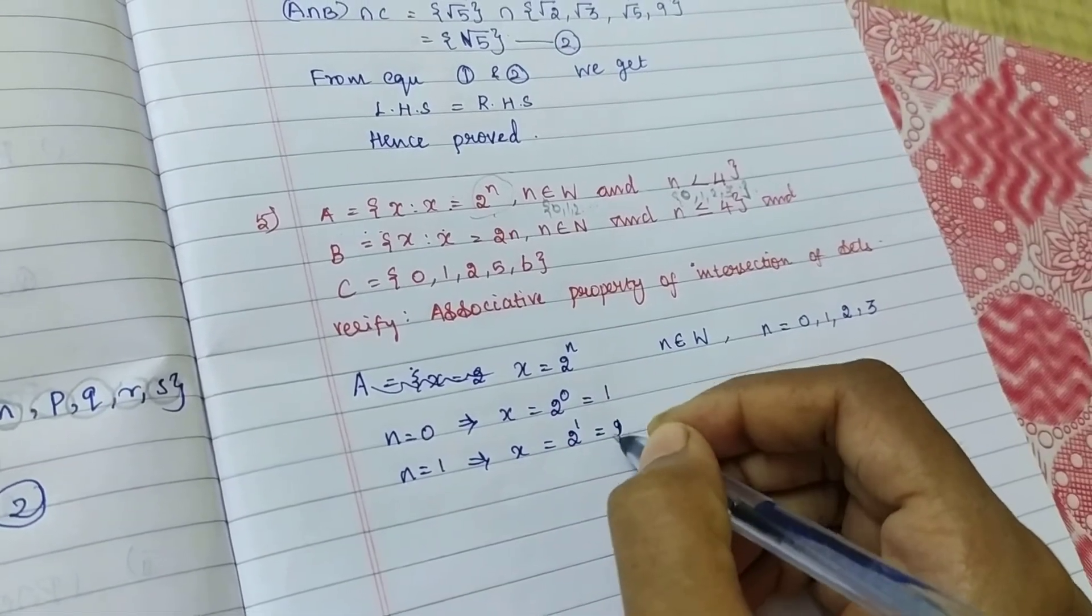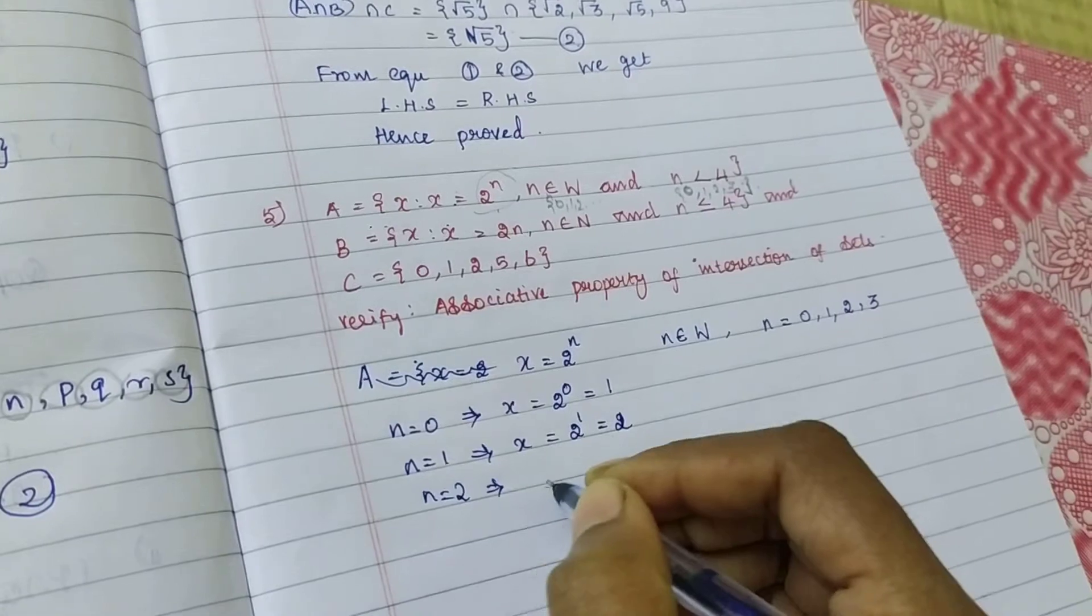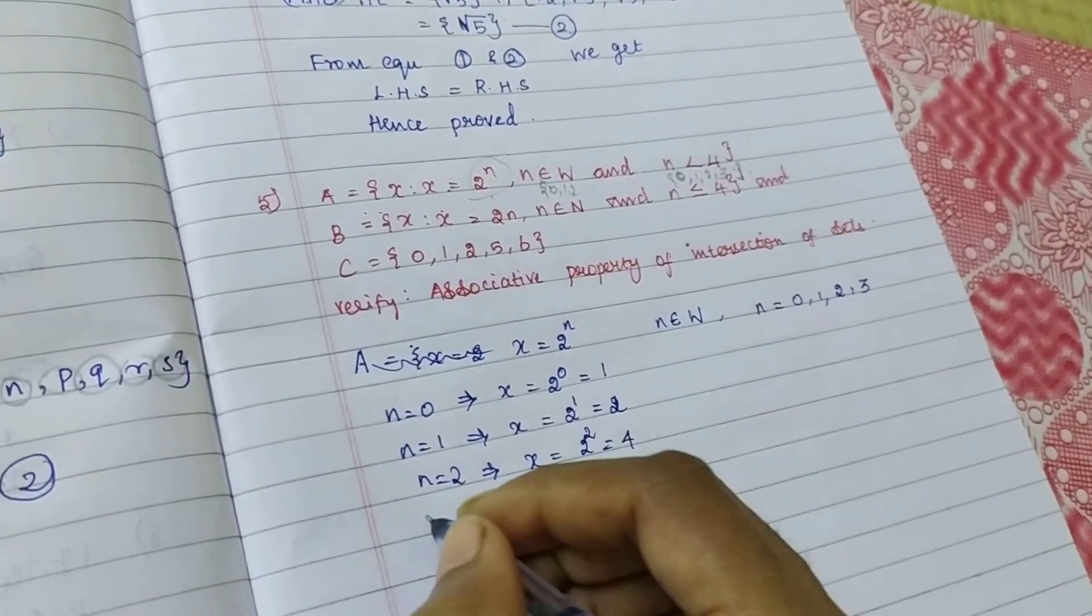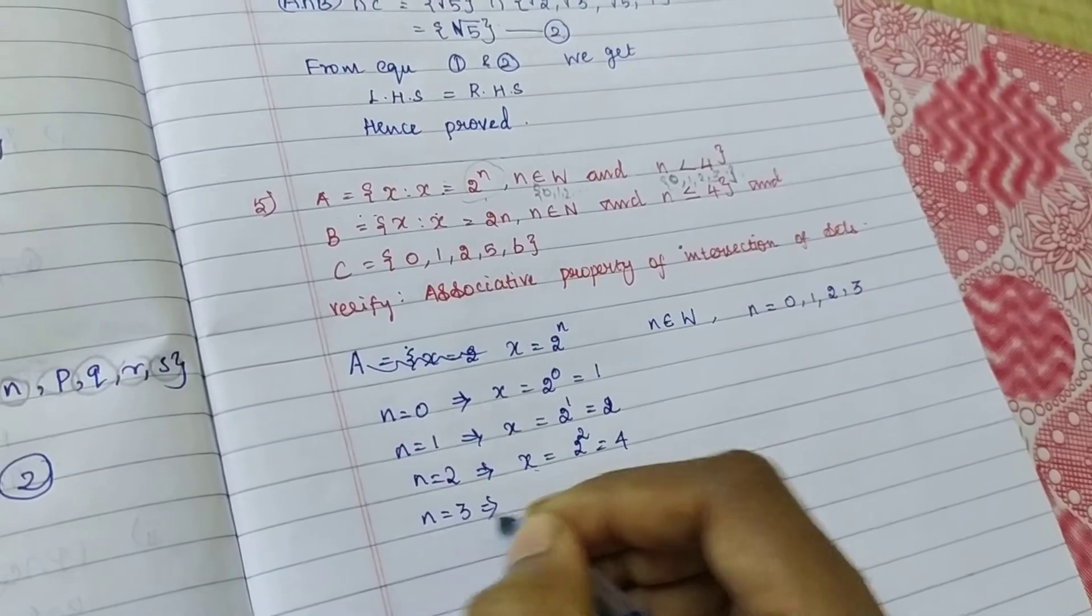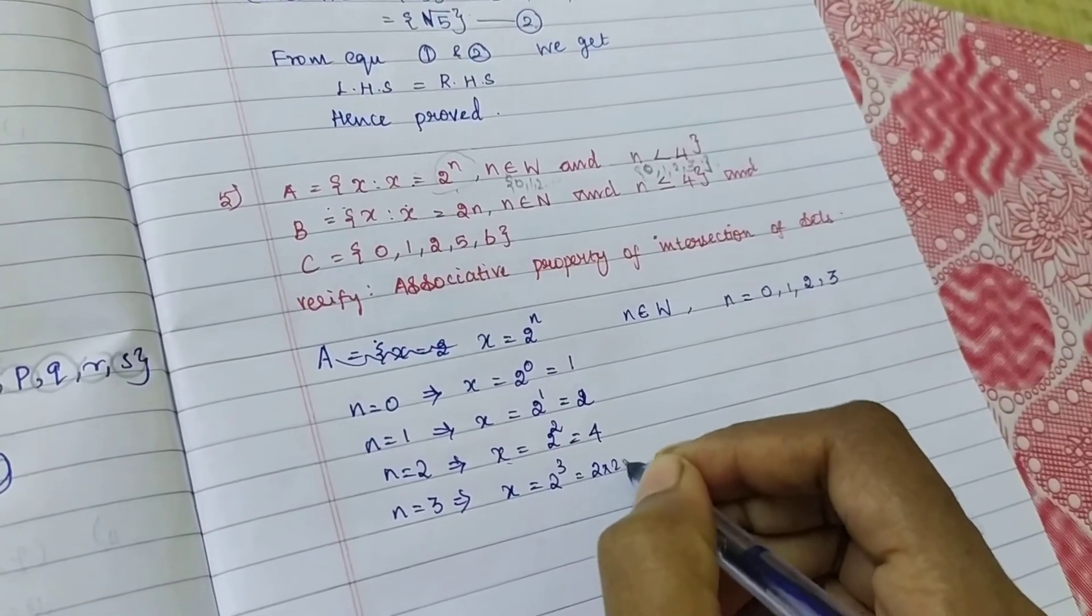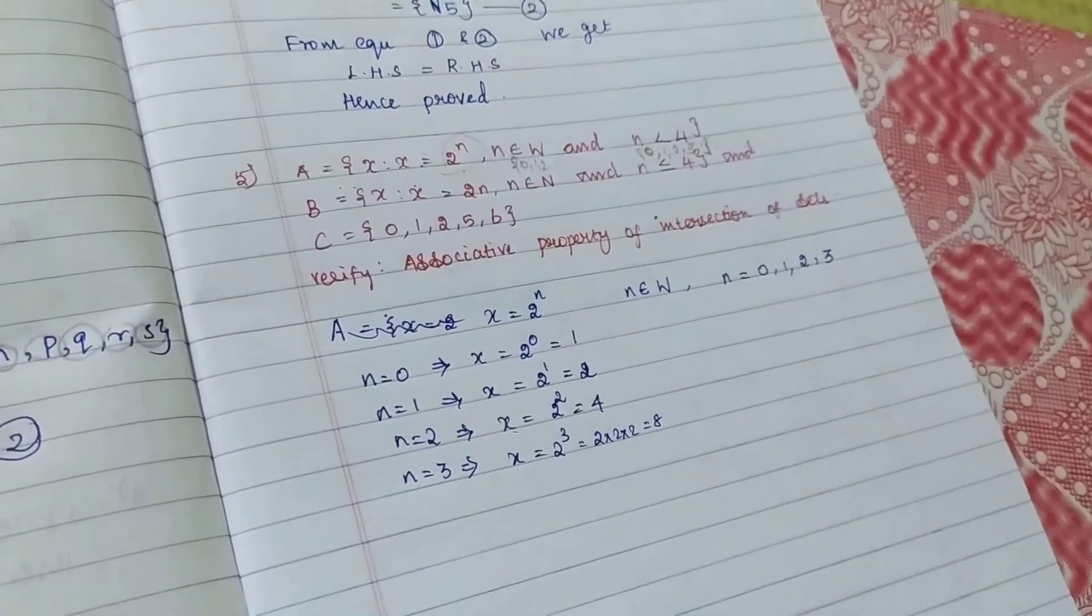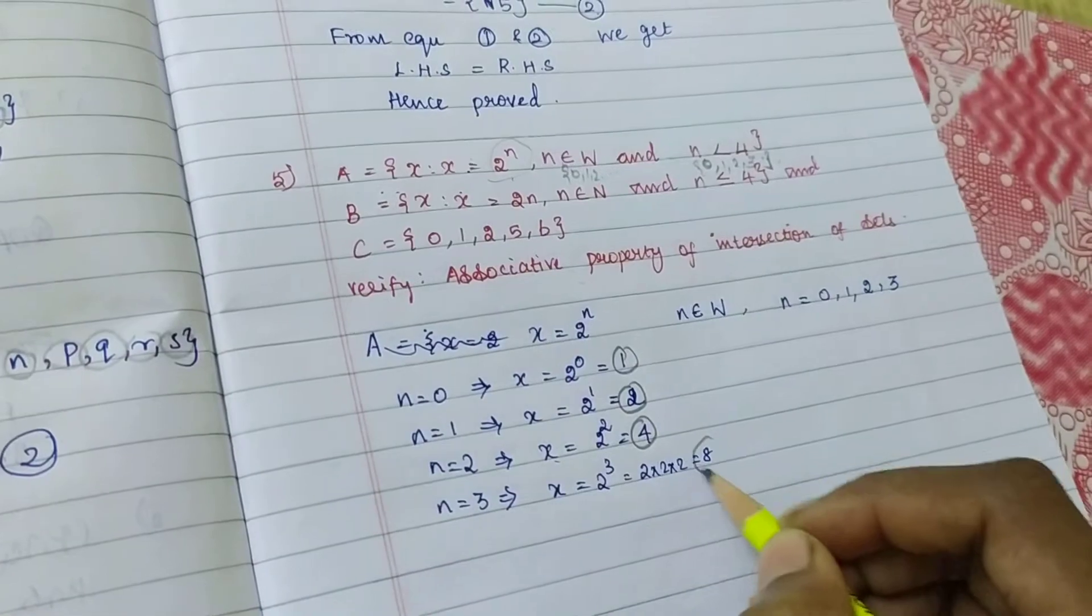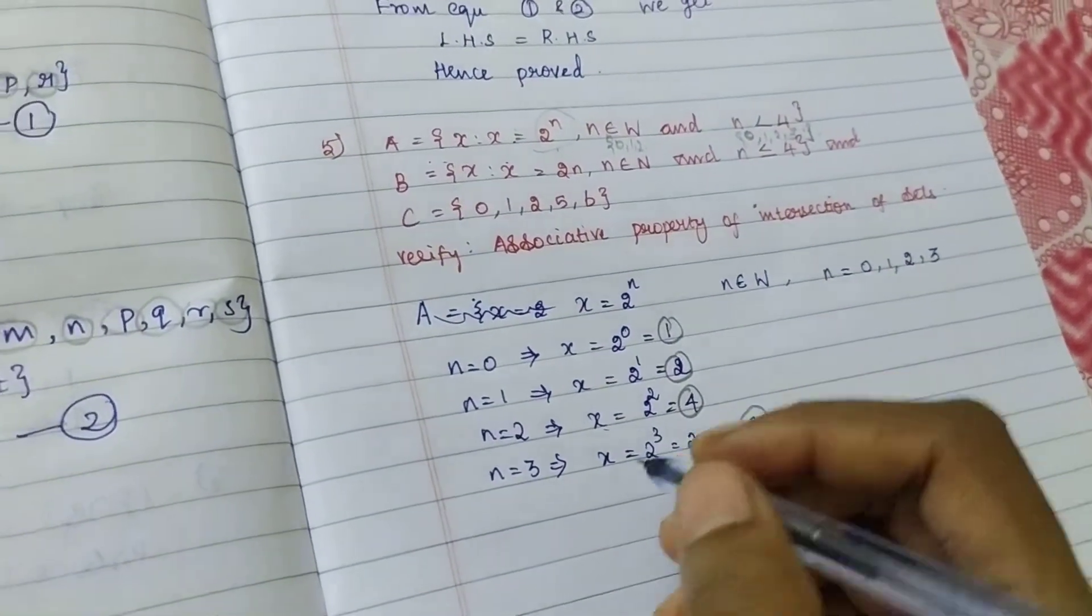X equal to 2 power 1, so 2. N equal to 2, X equal to 2 power 2 is 4. So, N equal to 3, X equal to 2 power 3. 2 into 2, 2 into 2, 8. What are the value we find out? 1, 2, 4, 8.